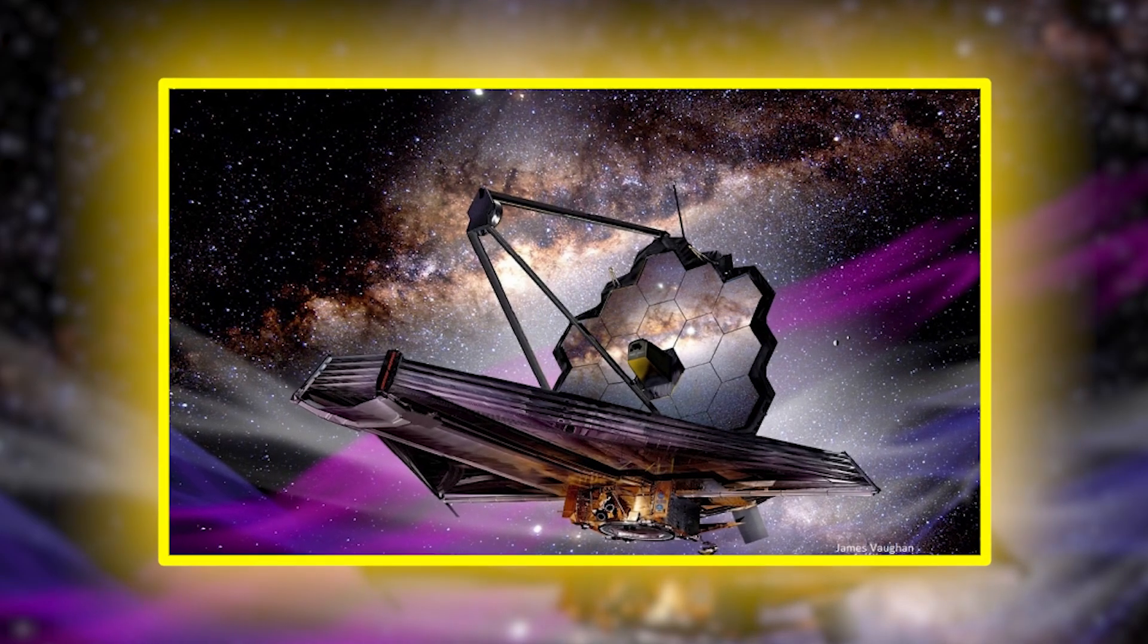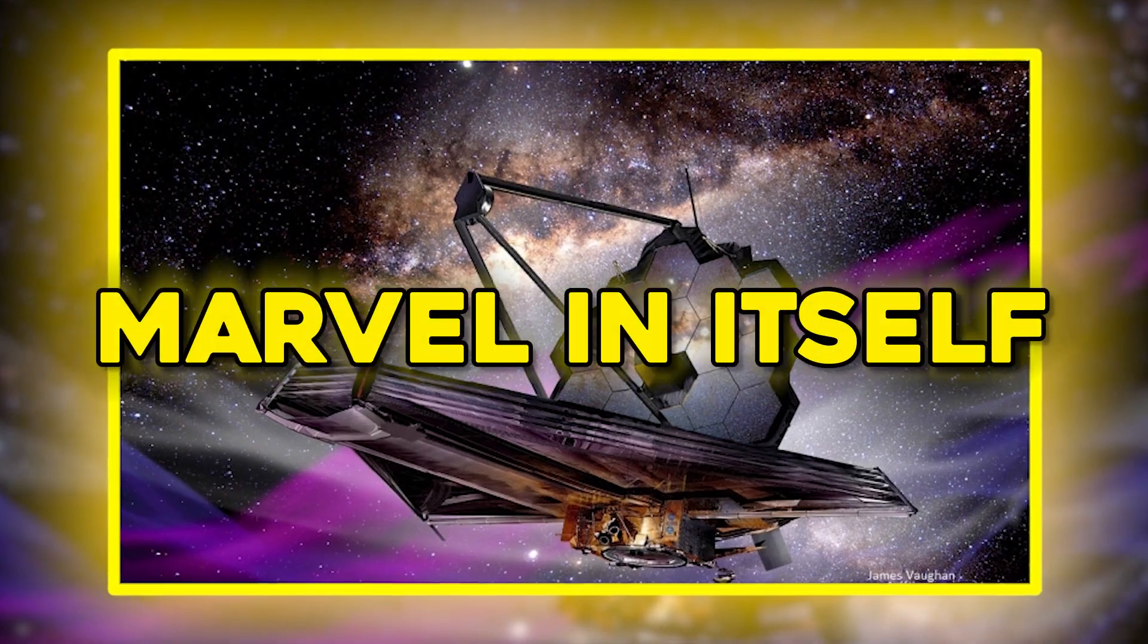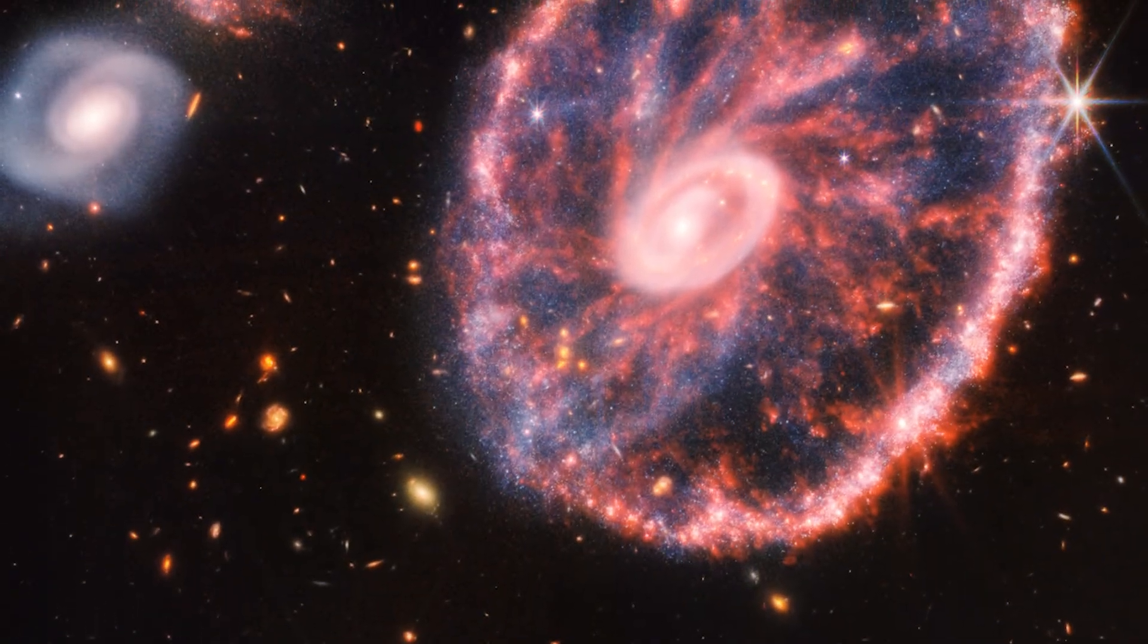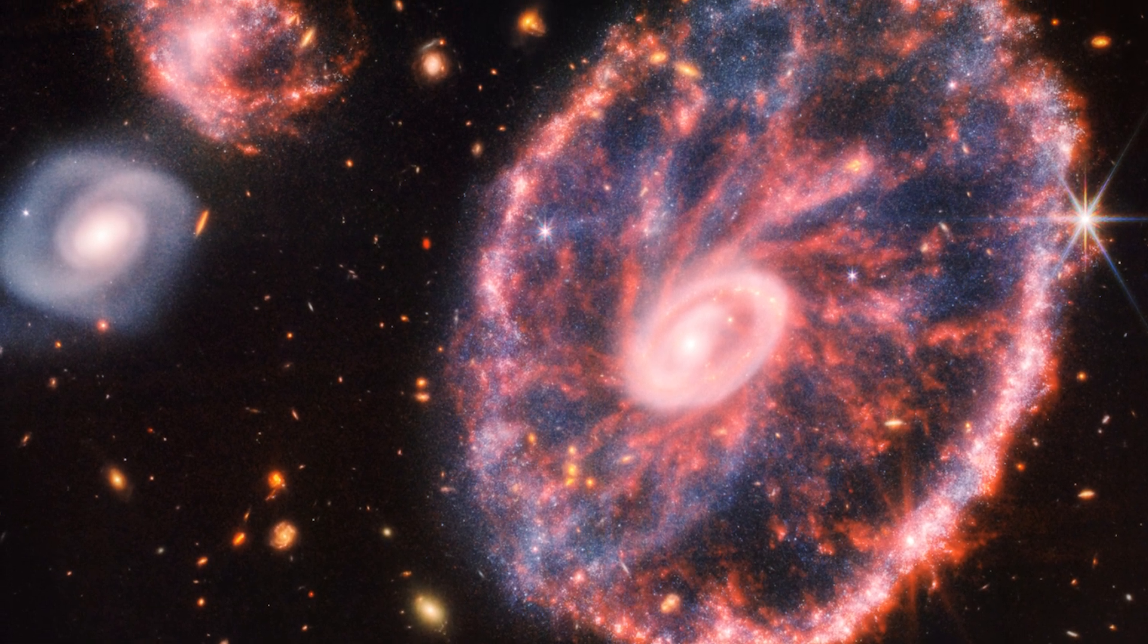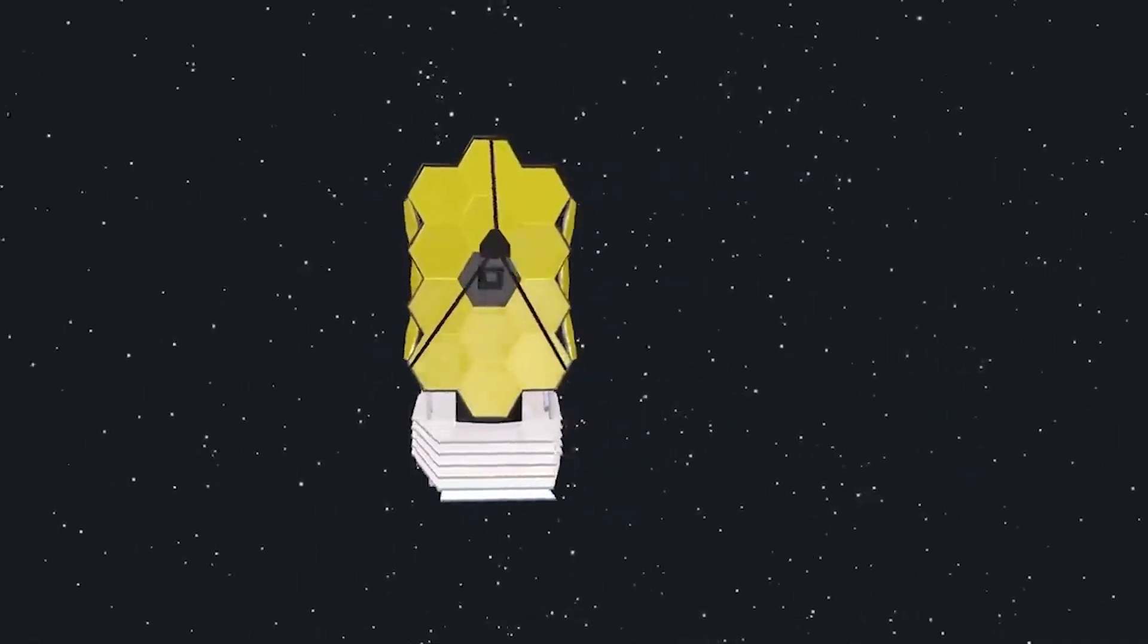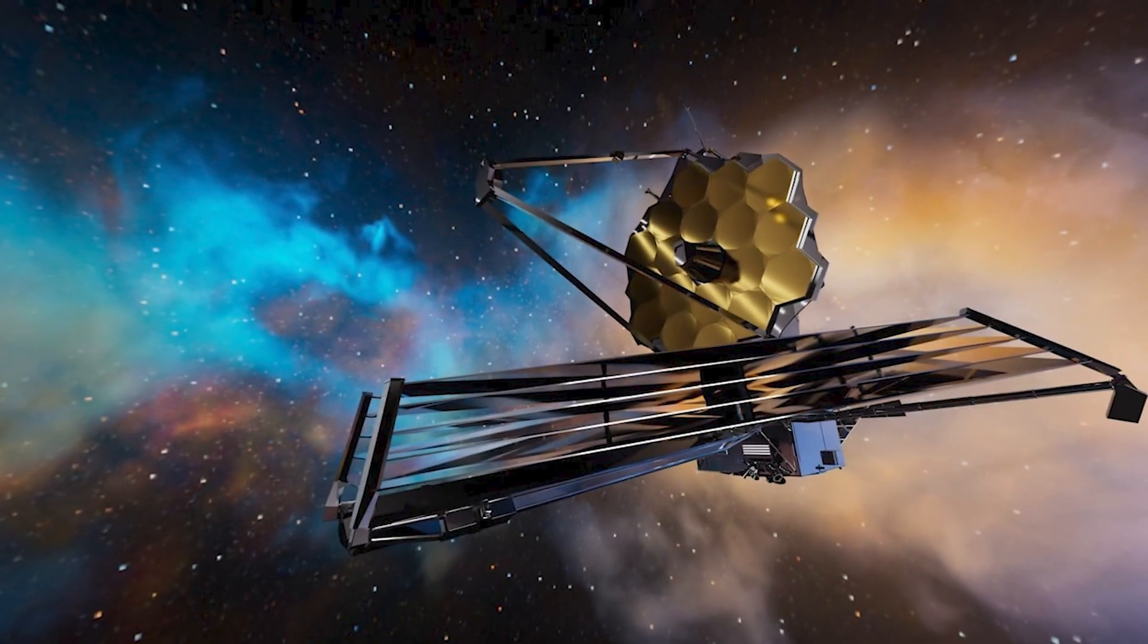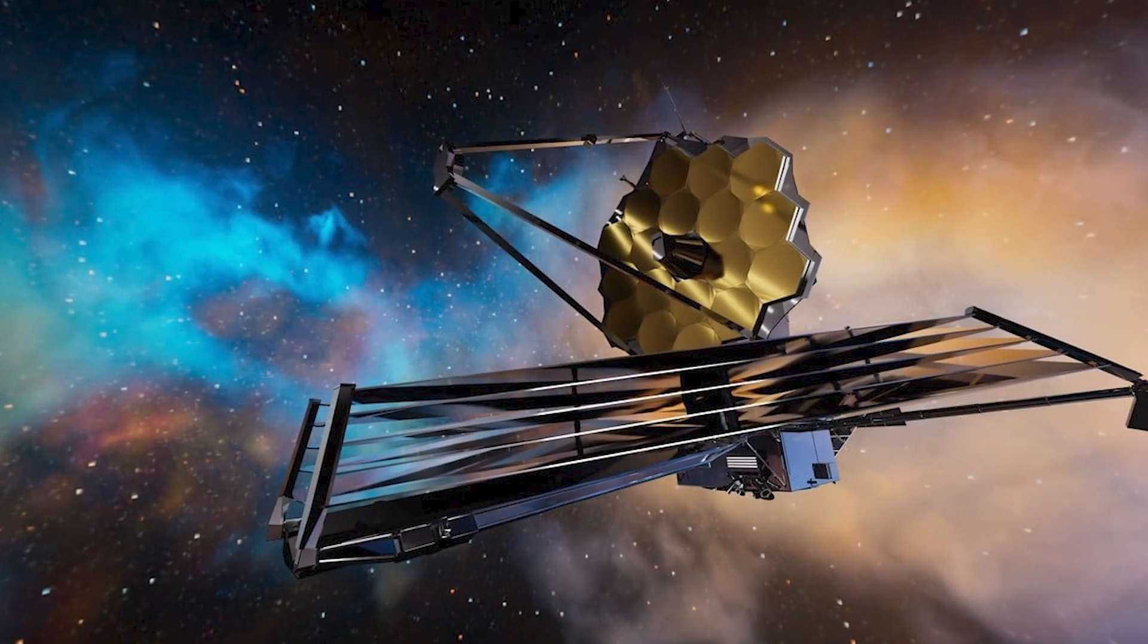On a technical level, the success of Webb's observations at this extreme distance is a marvel in itself. Its instruments are fine-tuned to detect the infrared light that has been redshifted beyond the optical range, meaning the telescope is essentially seeing heat signals from the dawn of time.